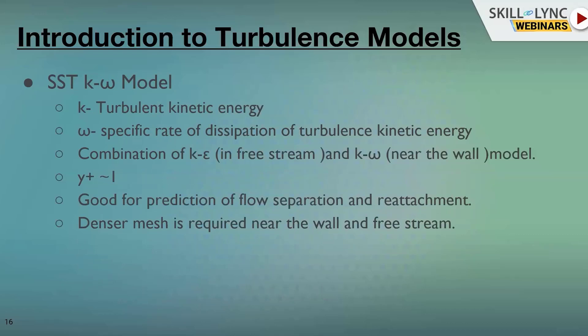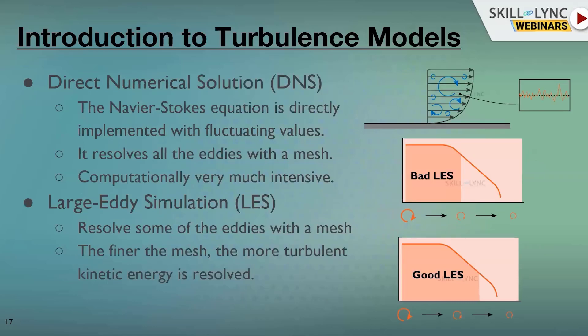There are other turbulence modeling approaches as well. What we have seen so far is the RANS approach — Reynolds-Averaged Navier-Stokes equations — where we are interested in the average quantity. We average the Navier-Stokes equations and using the turbulence model we find the Reynolds stresses. Another method is Direct Numerical Simulation, or DNS, where there is no averaging. The fluctuating components are directly plugged into the Navier-Stokes equations.